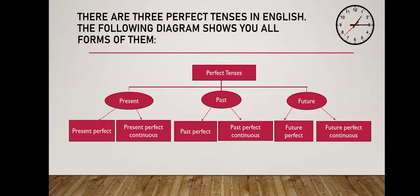There are three perfect tenses in English. The following diagram shows all forms of them. The three perfect tenses are: present, past, and future.